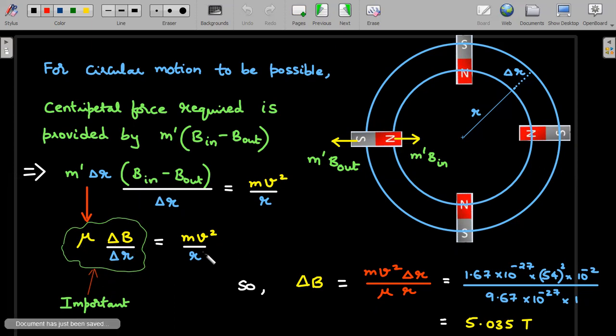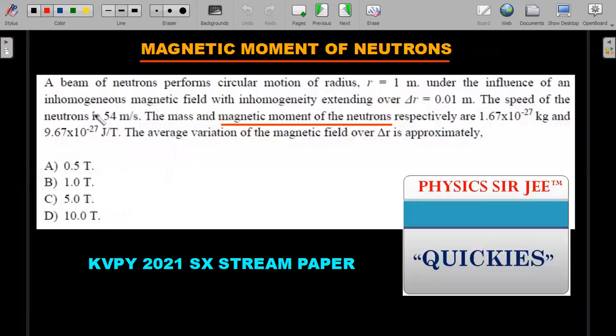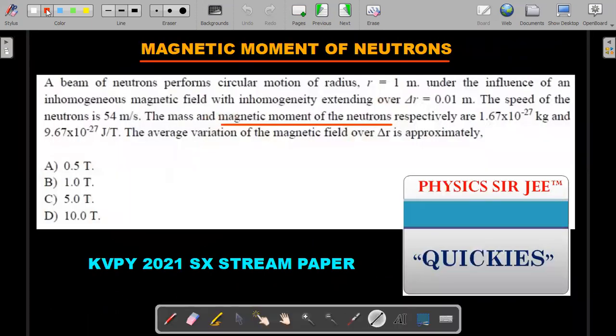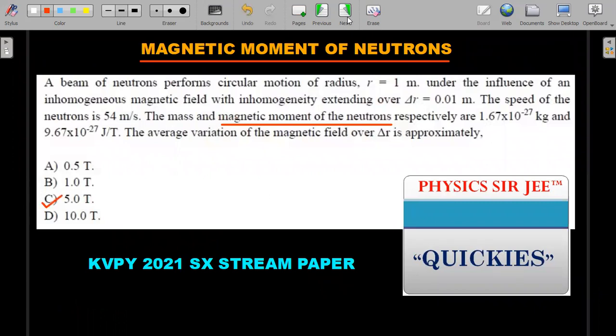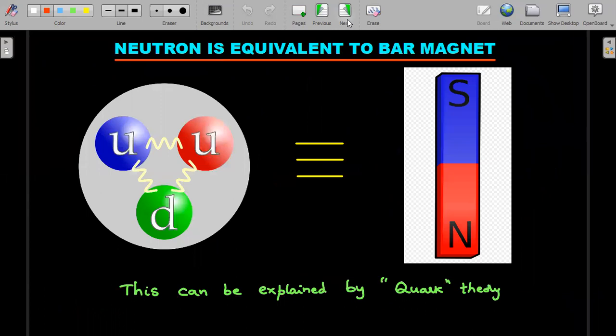And once you rearrange, you want the delta B, this is the expression for delta B with mass velocity, delta r, mu and r being provided in the question you substitute, the answer comes out to be very close to five tesla. So most of you answered this correctly. In the community tab, when I presented this question, I was very happy. But for those who are new to this concept, please do register it in your mind.